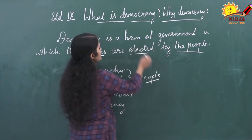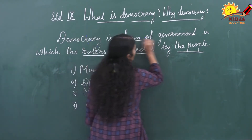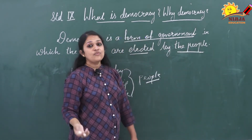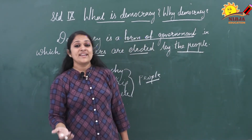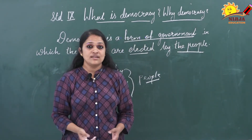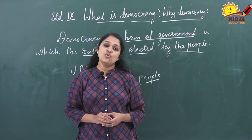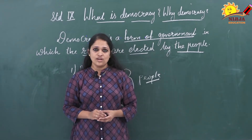Every citizen has a right to choose their ruler on an equal basis. And fourth, what kind of form of government is democracy? In democracy, can rulers do whatever they want?